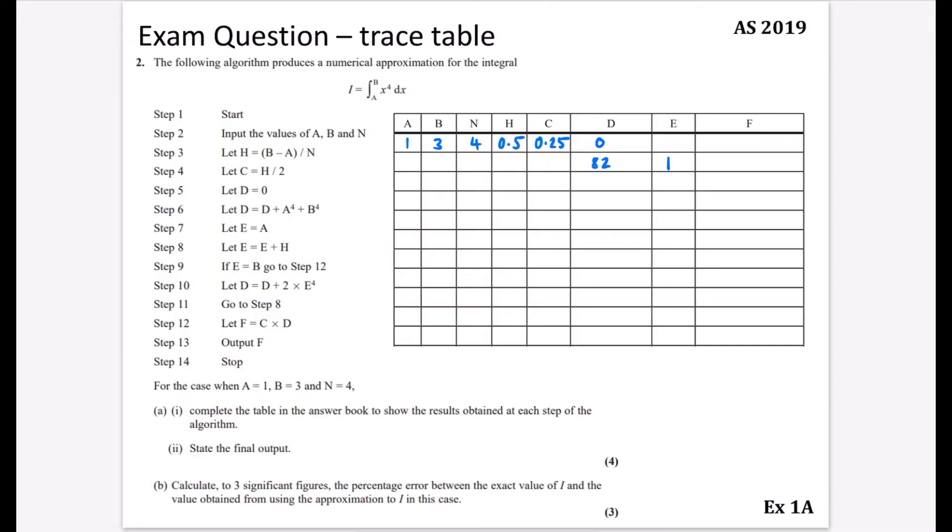Let e equal a, which is 1. Then let e equal e plus h, so 1 plus 0.5, which is 1.5. If e equals b (equals 3), we go to step 12. Otherwise, we continue. D is now the previous value of d plus 2 times e to the fourth. We need to do 2 times e to the fourth first. So 1.5 to the fourth times 2, plus the previous value of 82, gives us 92.125.